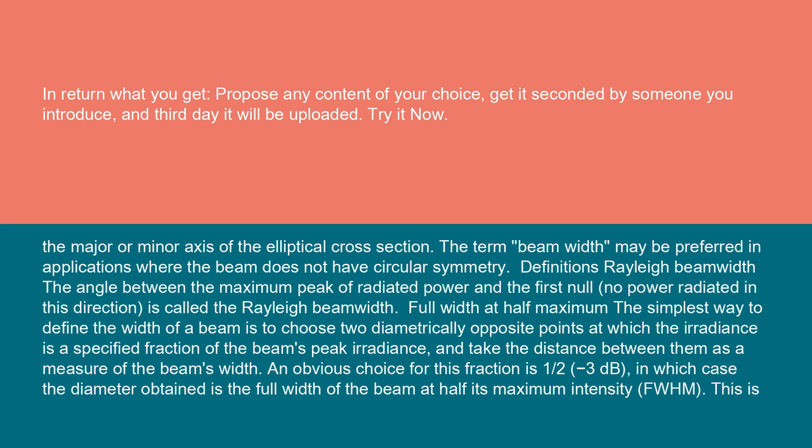Definitions: Rayleigh beam width - the angle between the maximum peak of radiated power and the first null, no power radiated in this direction, is called the Rayleigh beam width.